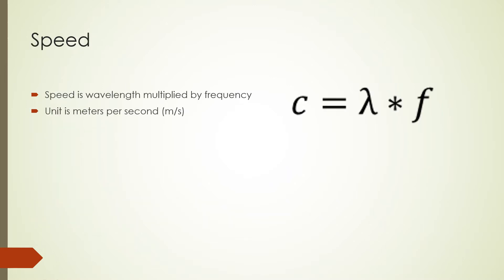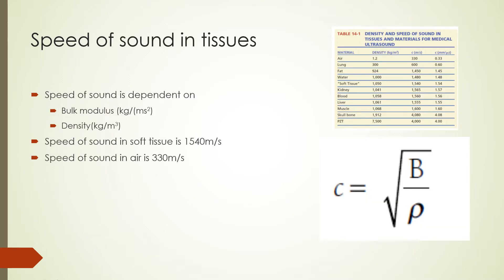Ultrasound speeds are given in meters per second and are calculated using the formula: speed c equals wavelength lambda multiplied by frequency f. The speed of sound in a medium is dependent on the properties of the medium. Sound speed is determined by the square root of the ratio of the bulk modulus B and the density rho of the medium. Bulk modulus is a measure of the stiffness of a medium and its resistance to being compressed. For soft tissue, the speed of sound is 1540 m/s, and for air it is 330 m/s.